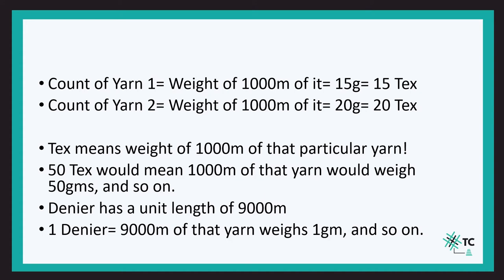Similarly, we have denier — that's a slight change where the constant length is now 9000 meters. So 1 denier means 9000 meters of a particular yarn weighs 1 gram, and 20 denier means 9000 meters of that yarn weighs 20 grams. That's a simple unitary system.